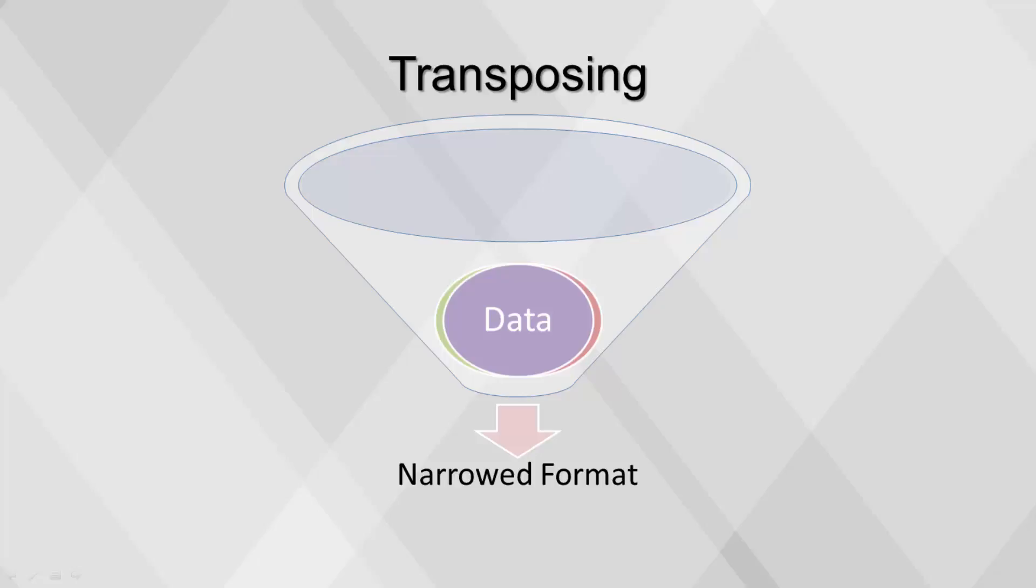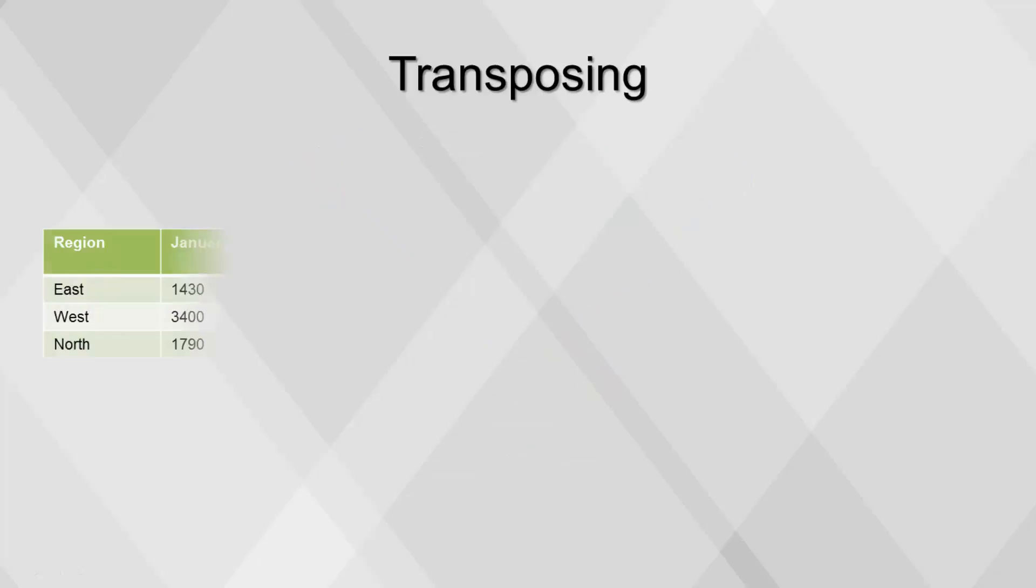Any fields that are not to be transposed are called key fields. For this example, we can use the result of the crosstab function from the previous section. Region is the only key field, while January, February, and March are the data fields to be transposed.